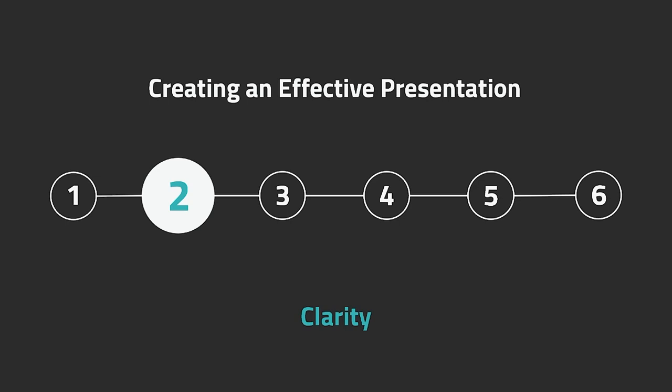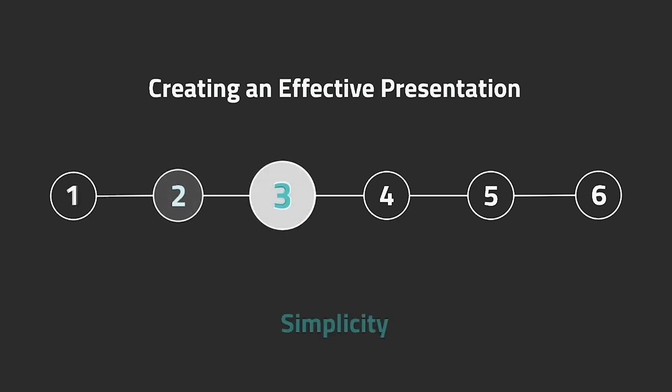Another tip is simplicity. All the information you want to convey must be summarized. When putting text in a PowerPoint presentation, you must follow the six-seven rule. Basically, in a single slide there must only be six lines of text, and per line there must only be seven words, so that the presentation looks much cleaner and more readable and viewers do not experience eye strain.